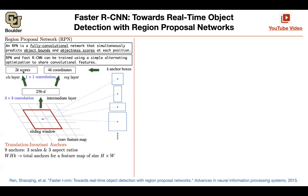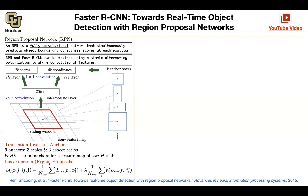Your region proposal network is going to ask: is there an object in this anchor box? Yes or no? You don't care what object it is. So you're going to have two classes per each anchor. The other output is adjusting those boxes — you're going to do a regression on the anchor boxes to adjust their location. So you're going to have two heads for your region proposal network, and you're going to train it on a loss function covering both classification and regression.